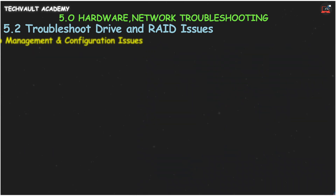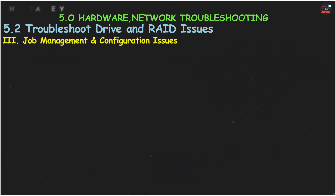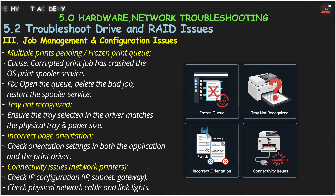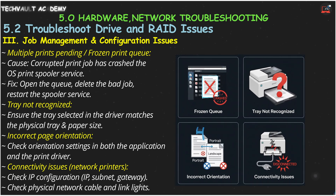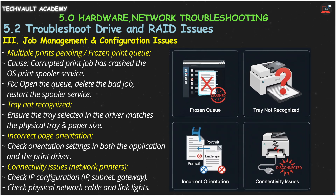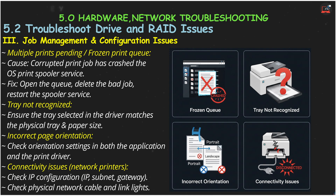Let's talk about job management and configuration. If you have multiple prints pending in queue or a frozen print queue, the printer spooler service in your operating system has likely crashed, often due to a corrupted print job. You'll need to go into the print queue, delete the bad job, and restart the spooler service. If the printer reports that a tray is not recognized, make sure the tray selected in your print driver matches the physical tray and the paper size you're trying to use.